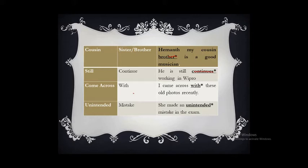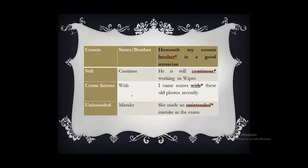'Come across with' — come across means meeting up with someone, so using 'with' again makes it superfluous. The correct sentence is: 'I came across these old photos recently.' 'Unintended mistake' — a mistake itself is an unintended thing, so using 'unintended' again is wrong. We should use either 'mistake' or 'unintended.' The correct form is: 'She made a mistake in the exam.'